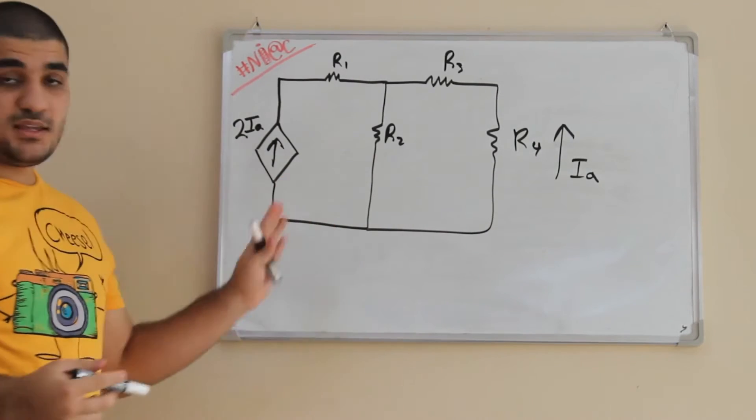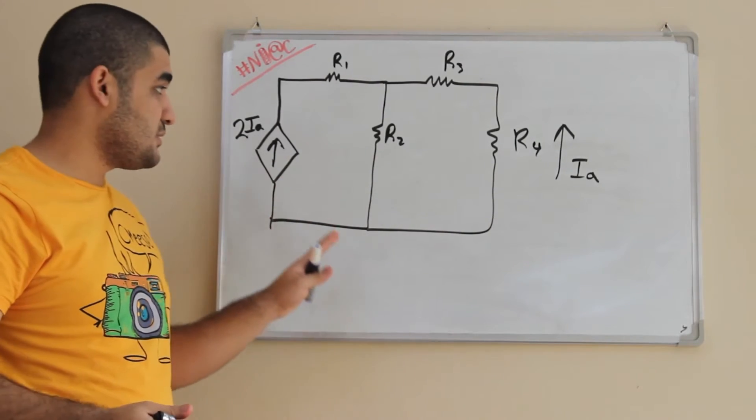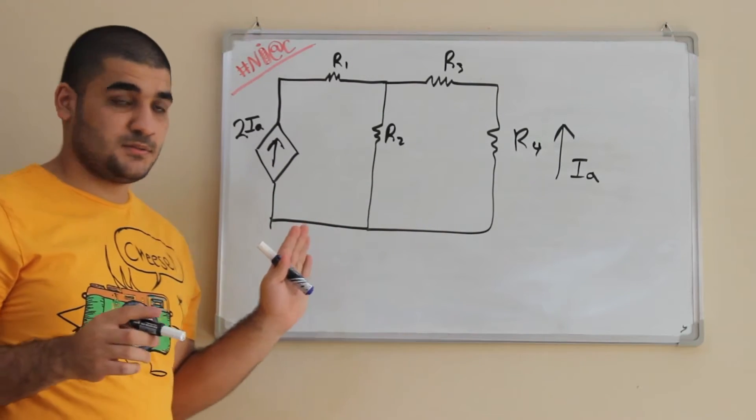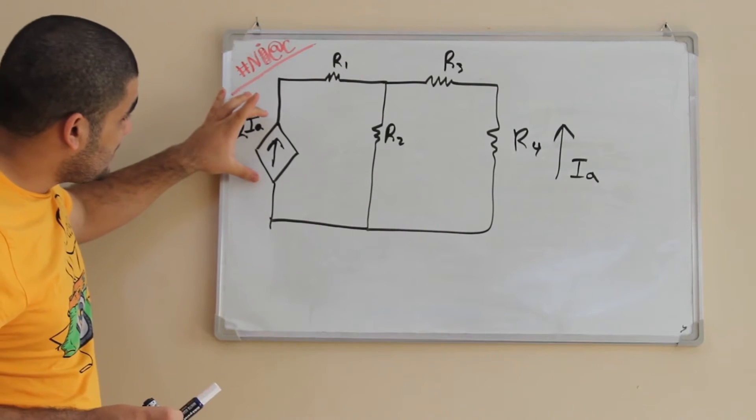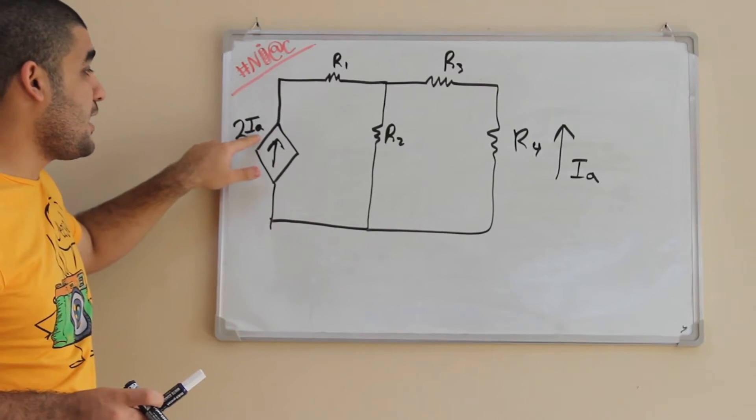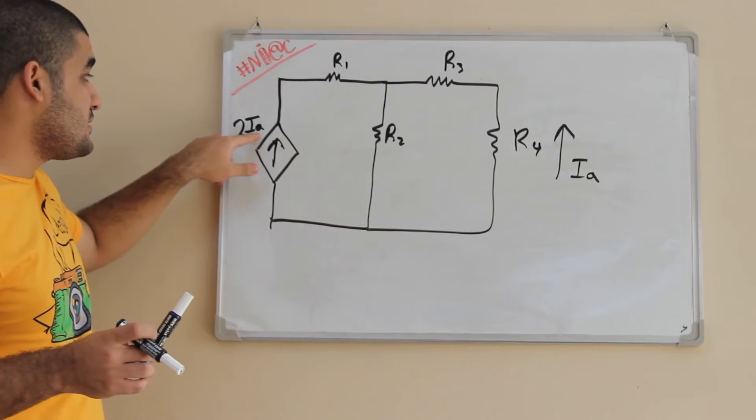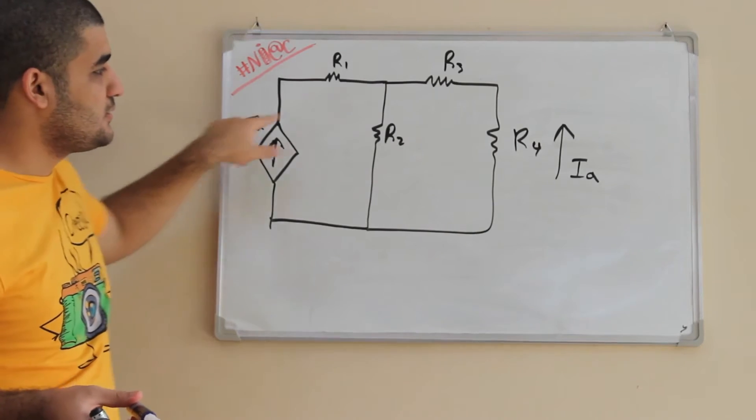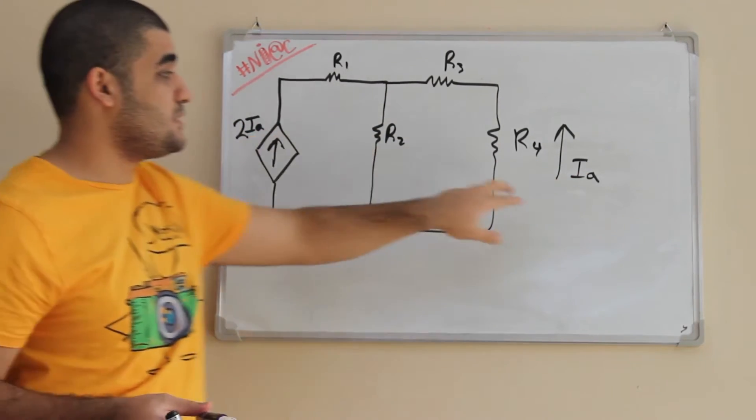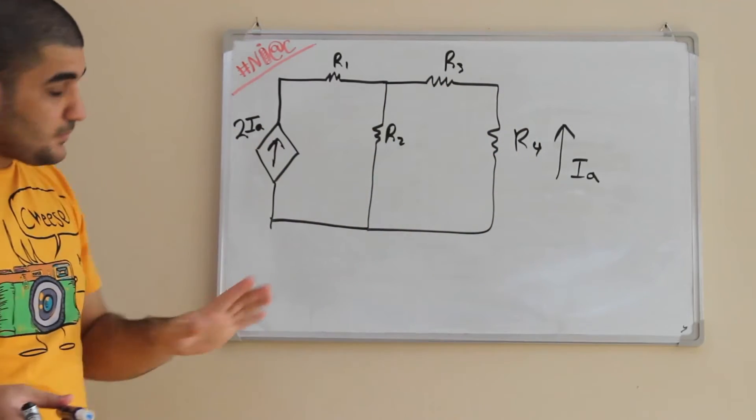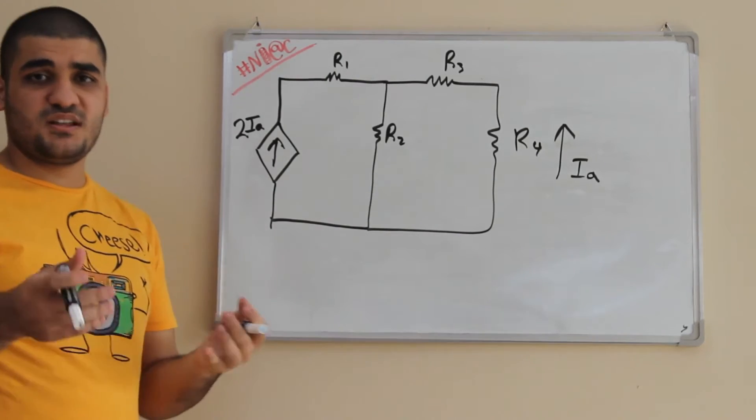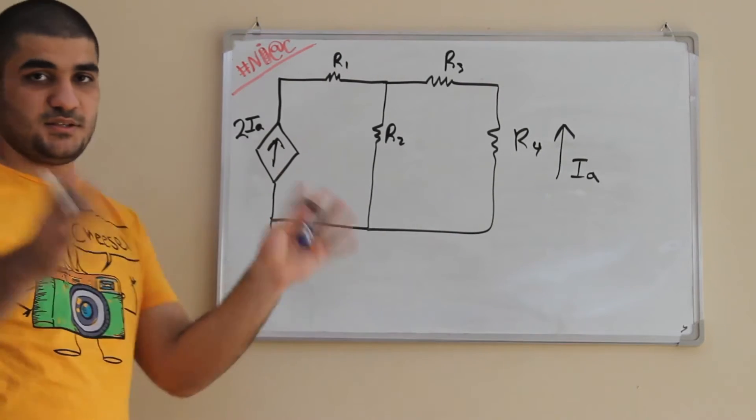When you see this question or something like this, first of all, we look at the circuit. You see that I have a dependent current source and its value is 2IA. Then I say, okay, where is IA? Look, here is IA. So the value of this current source depending on this branch. And it's asking to define the constants of the circuit and we analyze the circuit.